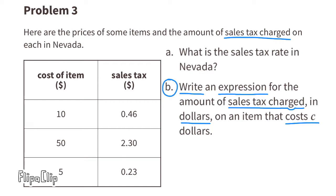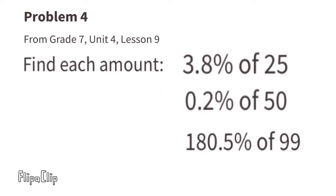Part B: Write an expression for the amount of sales tax charged in dollars on an item that costs c dollars. Using the decimal value we found in part A, the expression is 0.046 × c, which represents the sales tax charged in dollars on an item costing c dollars.